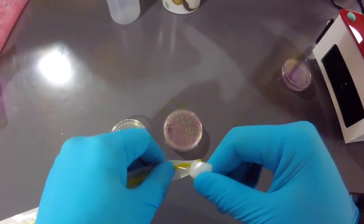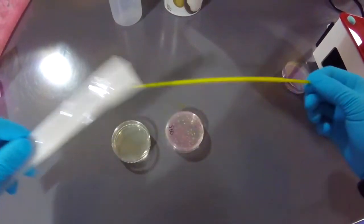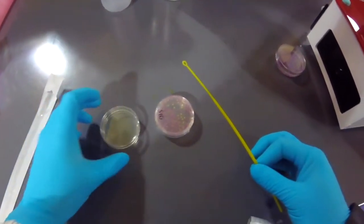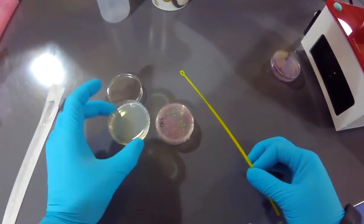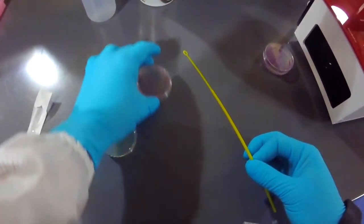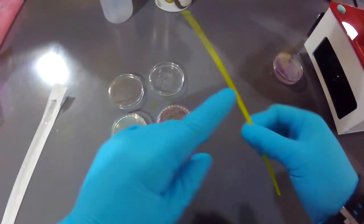So I'm going to open up my loop, pull out my loop here, I'm going to take my lid off of my plate that I'm going to streak, and I'm going to start with my source bacteria.